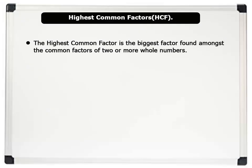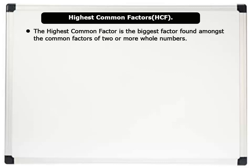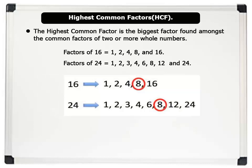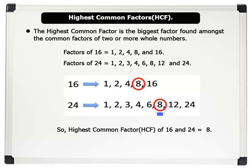The highest common factor is the biggest factor found amongst the common factors of two or more whole numbers. For example, factors of 16 are: 1, 2, 4, 8, and 16. And factors of 24 are: 1, 2, 3, 4, 6, 8, 12, and 24. The common factors of 16 and 24 are: 1, 2, and 8. But 8 is the biggest factor. Therefore, the highest common factor of 16 and 24 equals 8.